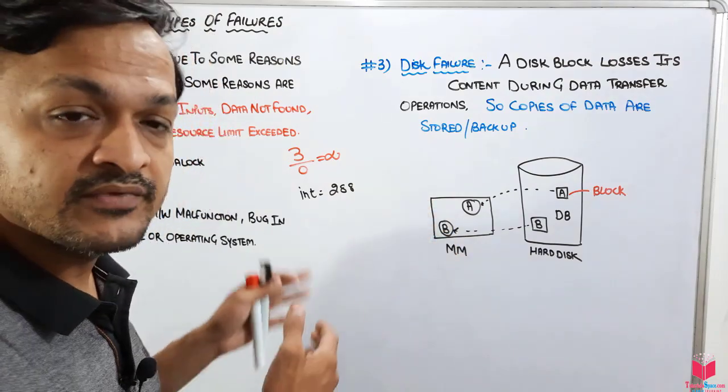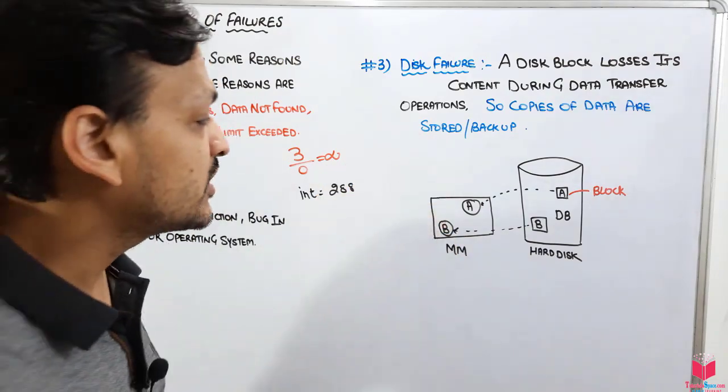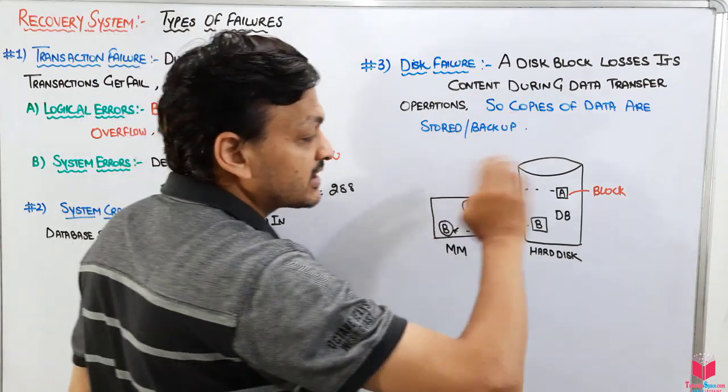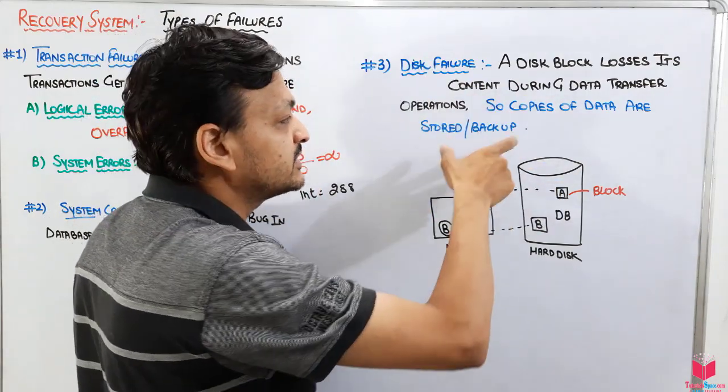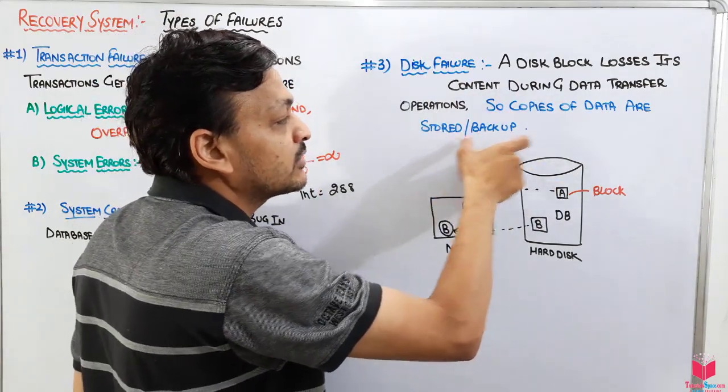So recovering from this kind of problems, we maintain some copies of these variables somewhere or store them in the backup. We will take some backup.